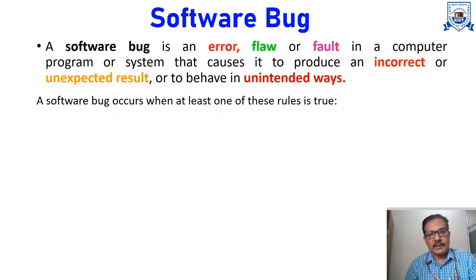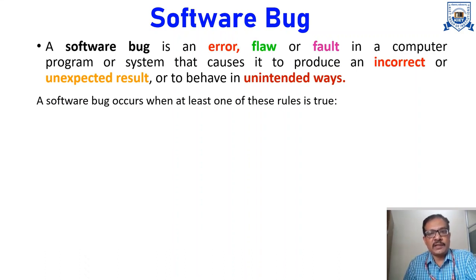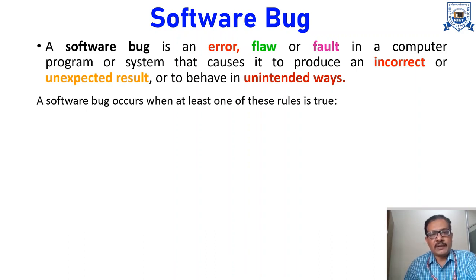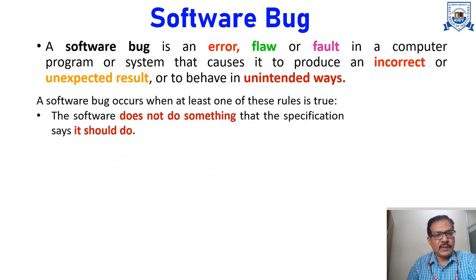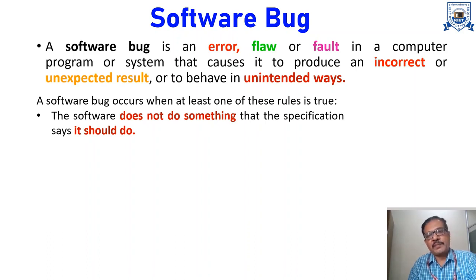A software bug is an error, flaw, or fault in a computer program or system that causes it to produce an incorrect or unexpected result, or to behave in unintended ways. A software bug occurs when at least one of these rules is true. The first one is: the software does not do something that the specification says it should do — that means if my system is not performing according to the specification, then there is a bug.